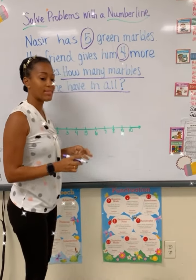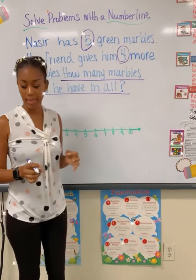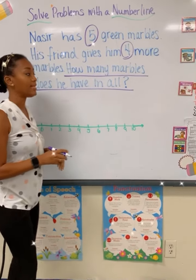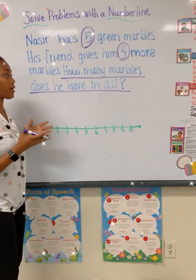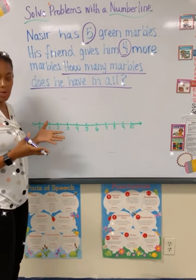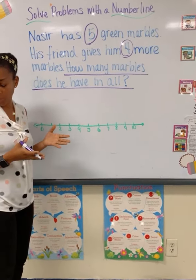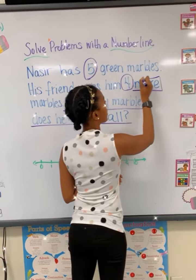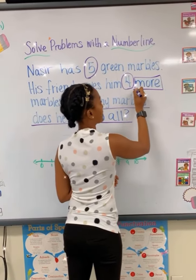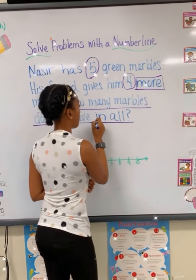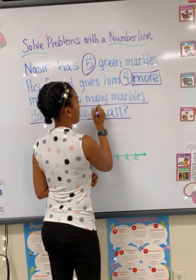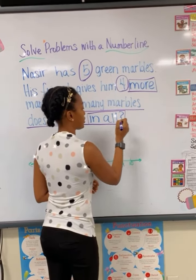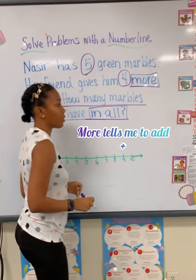What is the next thing I need to do? Box in your clue words. I need to box in my clue words. What are my clue words? More and in all. So box in 'more' and box in 'in all' because those are our clue words.